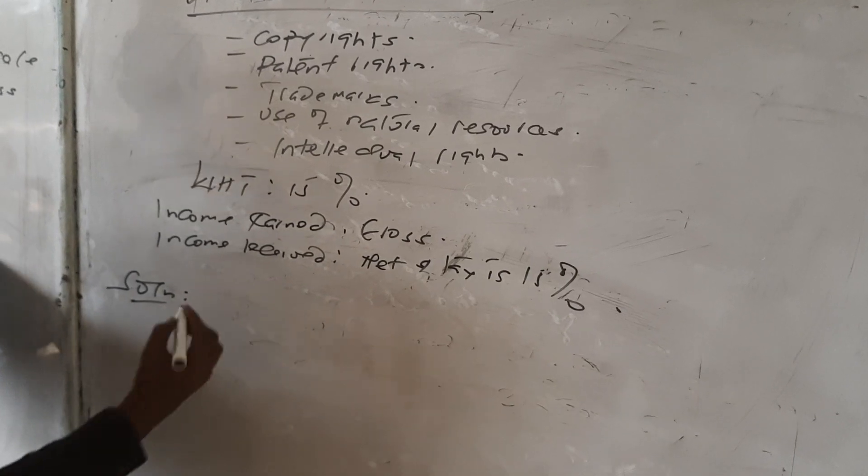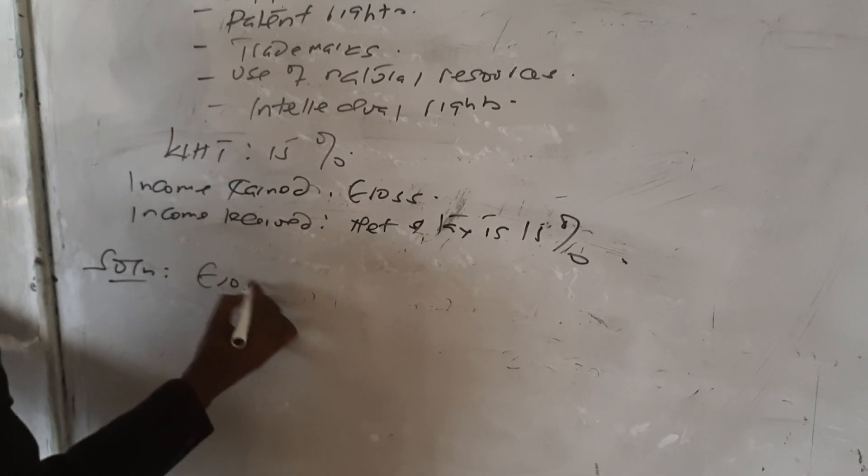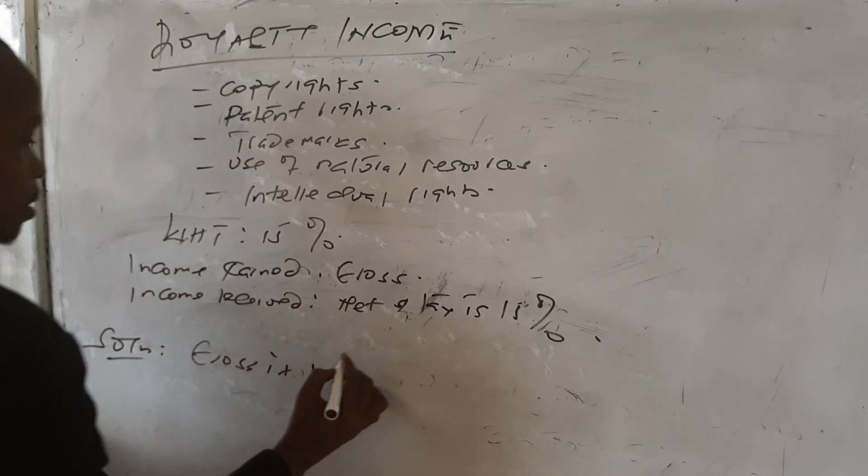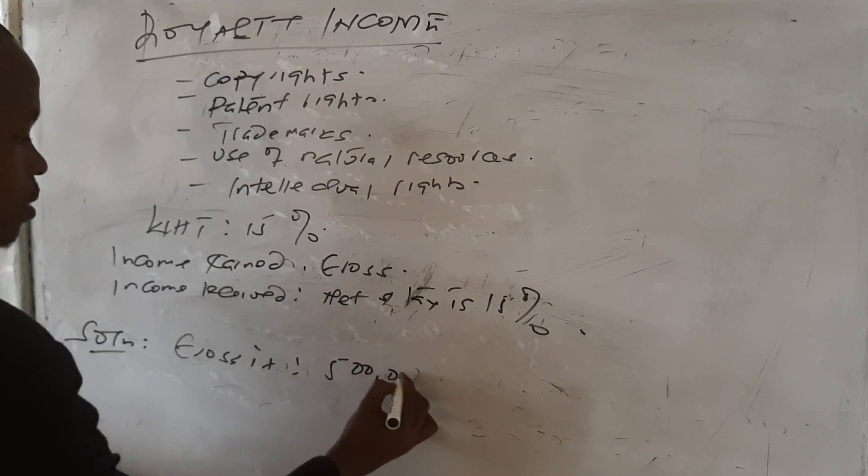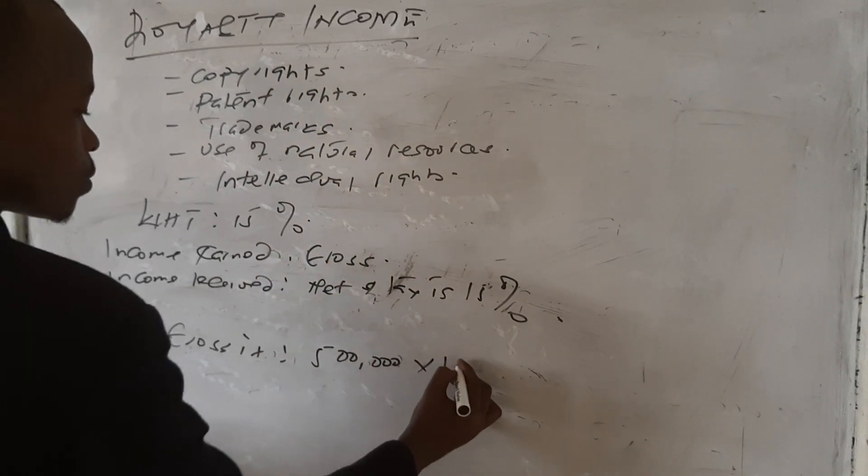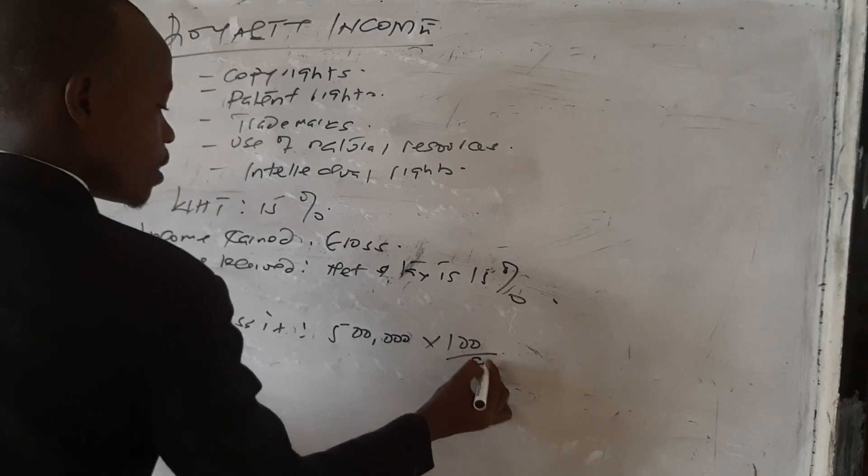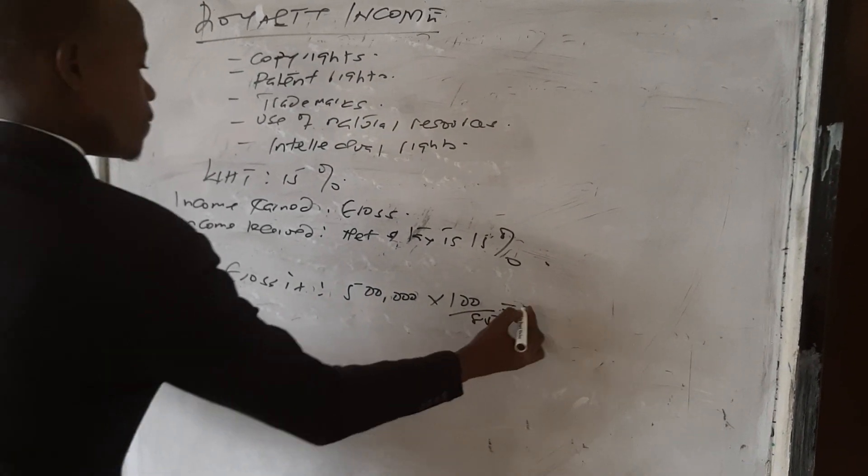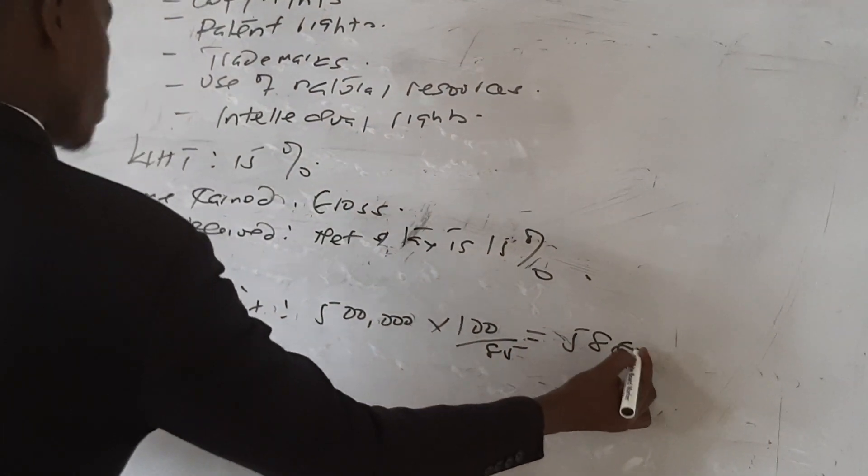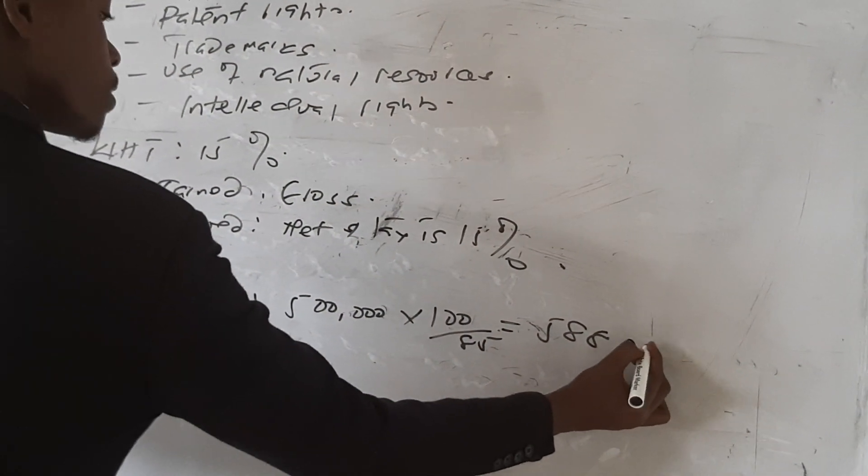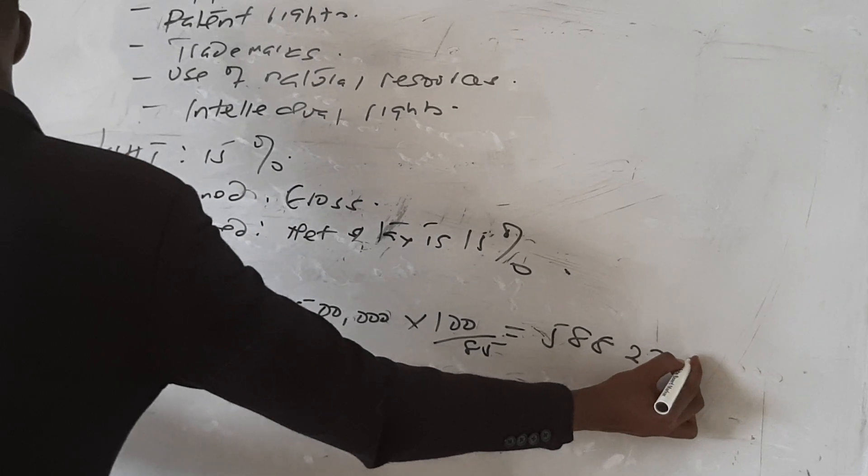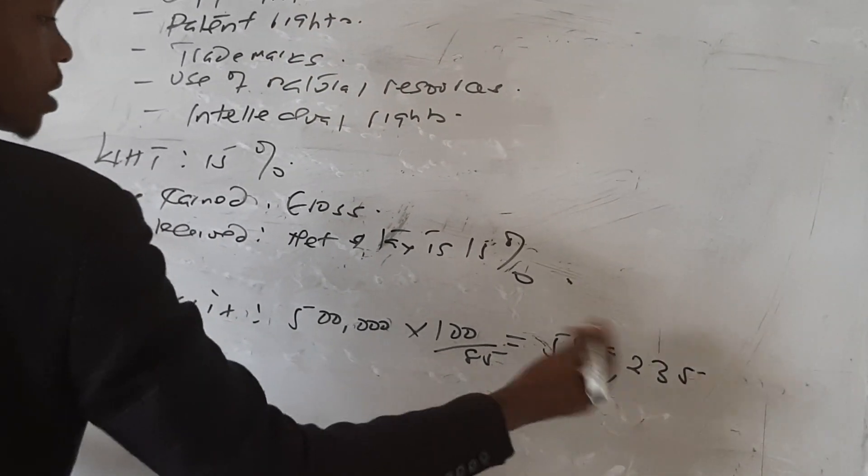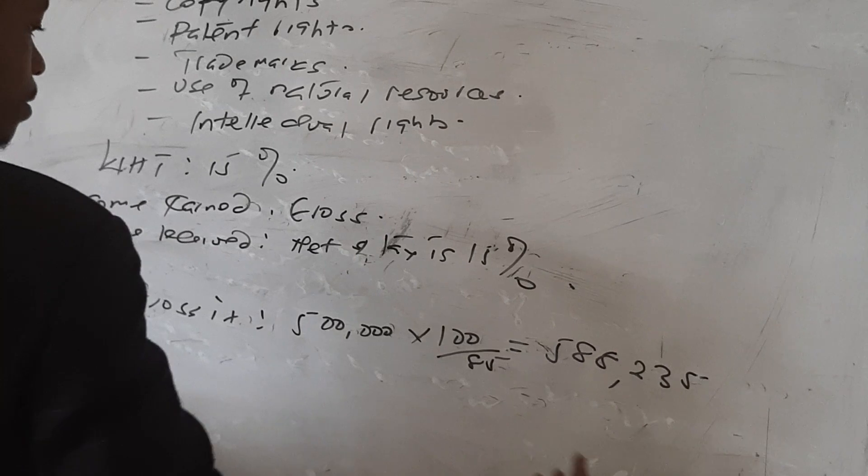How do we gross? We need to gross it by 500,000 times 100 over 85, which gives me 588,235.